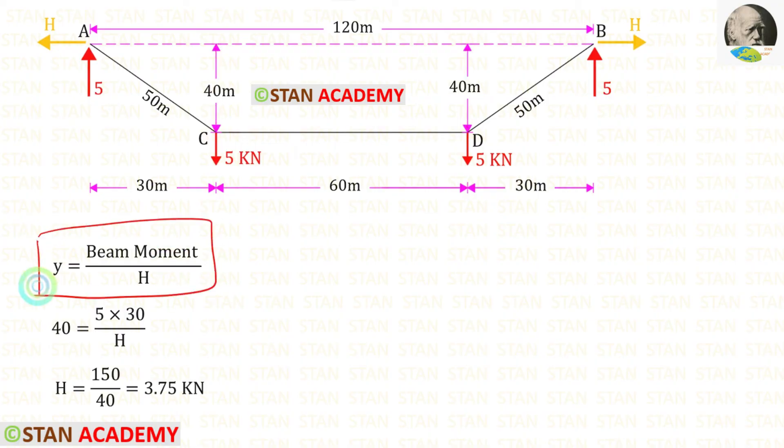Now, using this formula, we can find the horizontal thrust H. Let us take the point C. Up to the point C, we have only the vertical reaction 5. The vertical reaction 5 is acting in the clockwise direction, so that it will be positive and the distance is 30. In the point C, y is 40. Finally, for H, we will get 3.75 kilonewtons.